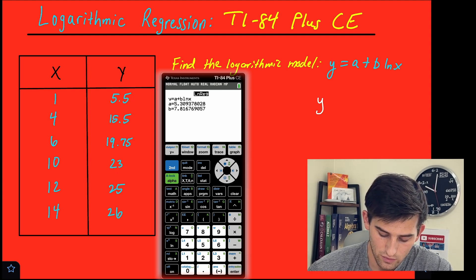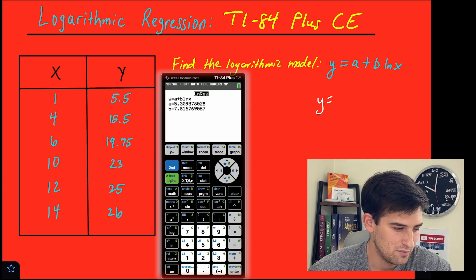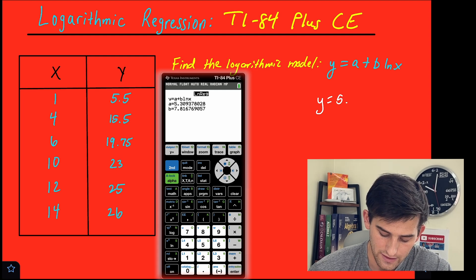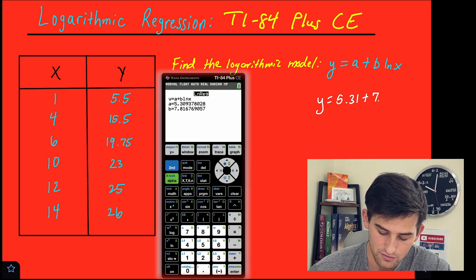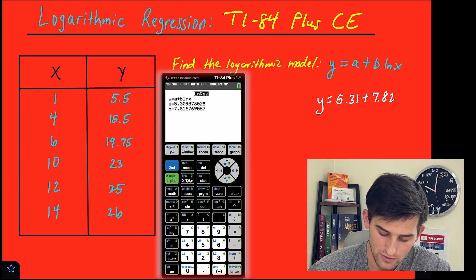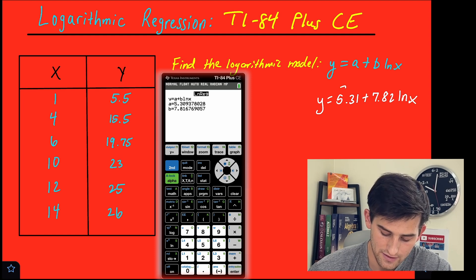So now we can write our equation. Y equals A is 5.31. So 5.31 plus B is 7.82. And we have ln of x, okay?